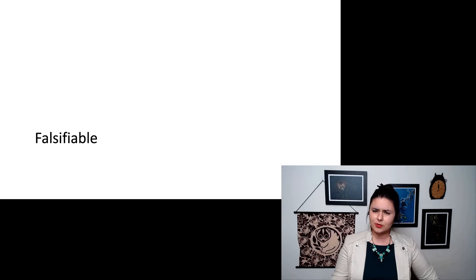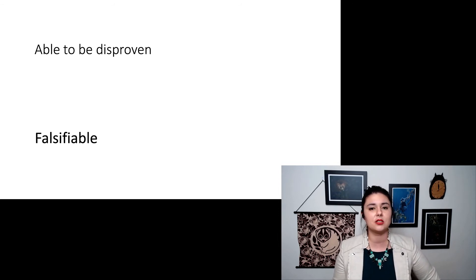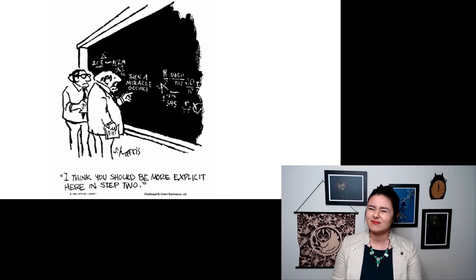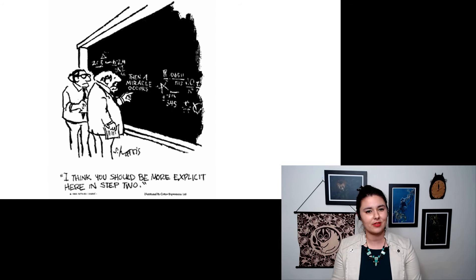But let's start with falsifiable. What does this mean? Falsifiable just means that there are conditions under which you can disprove this hypothesis. So in this example, a miracle - you can't really disprove that.